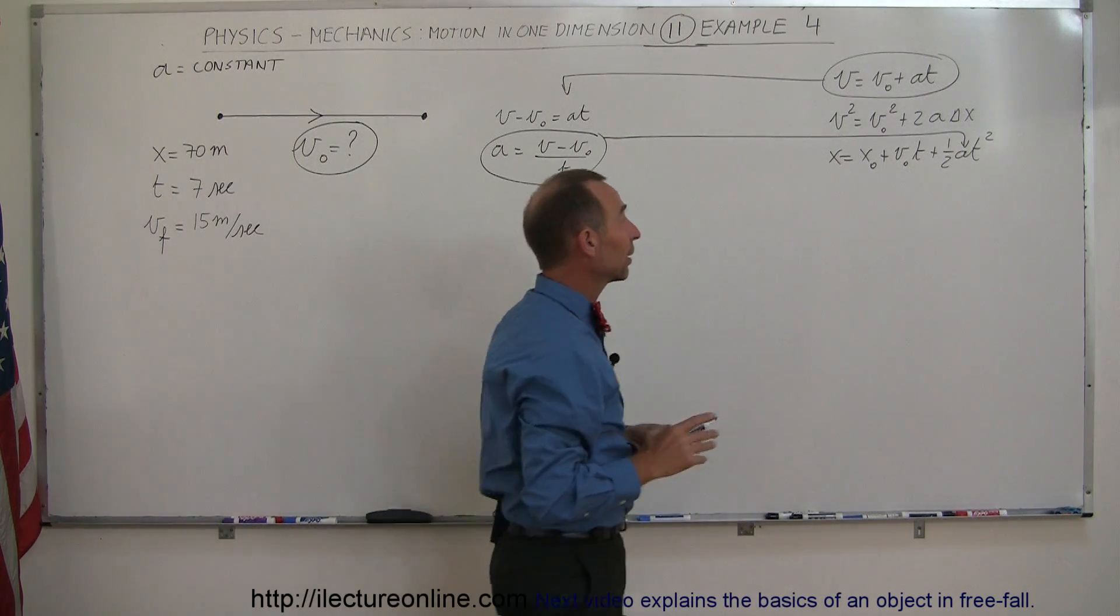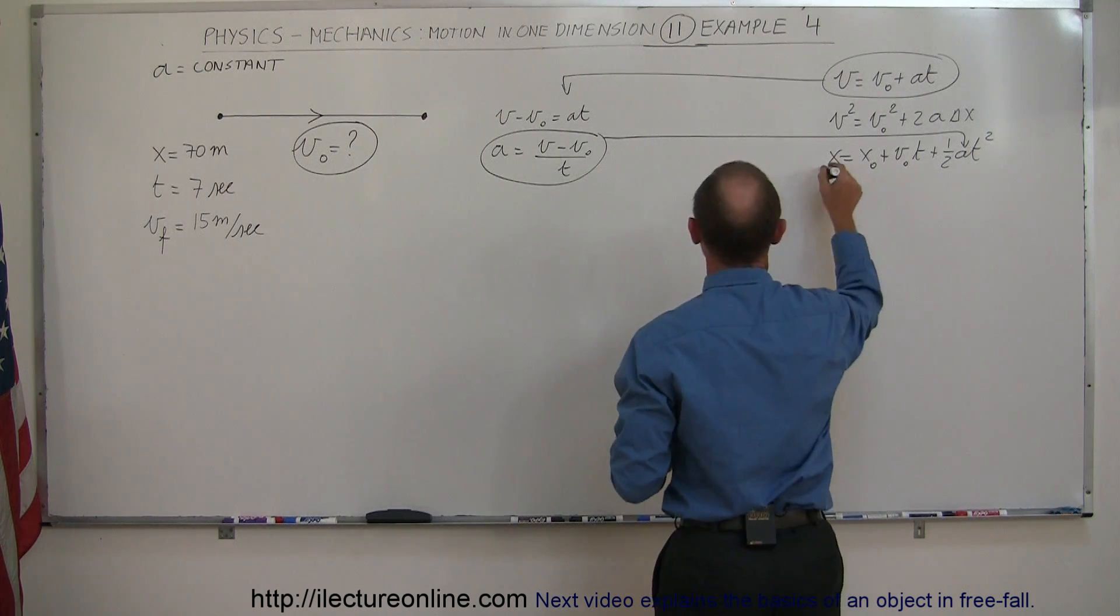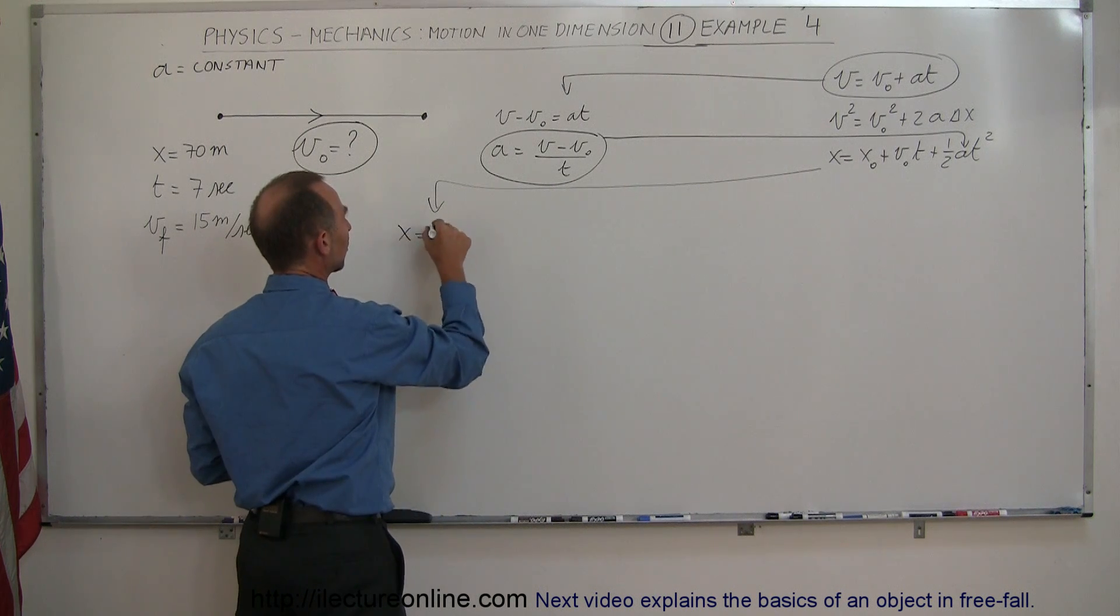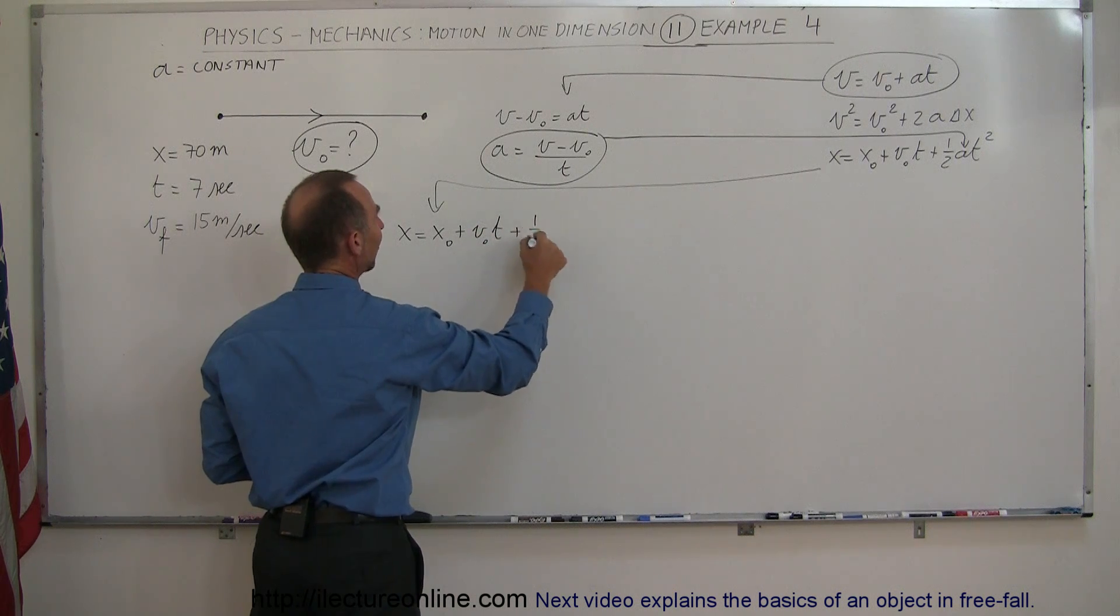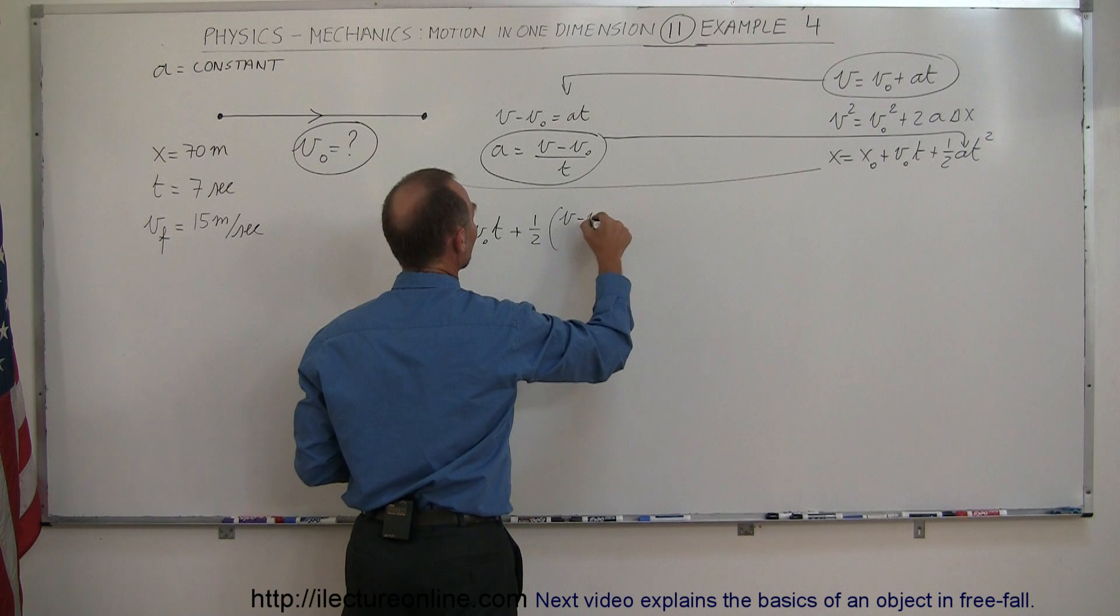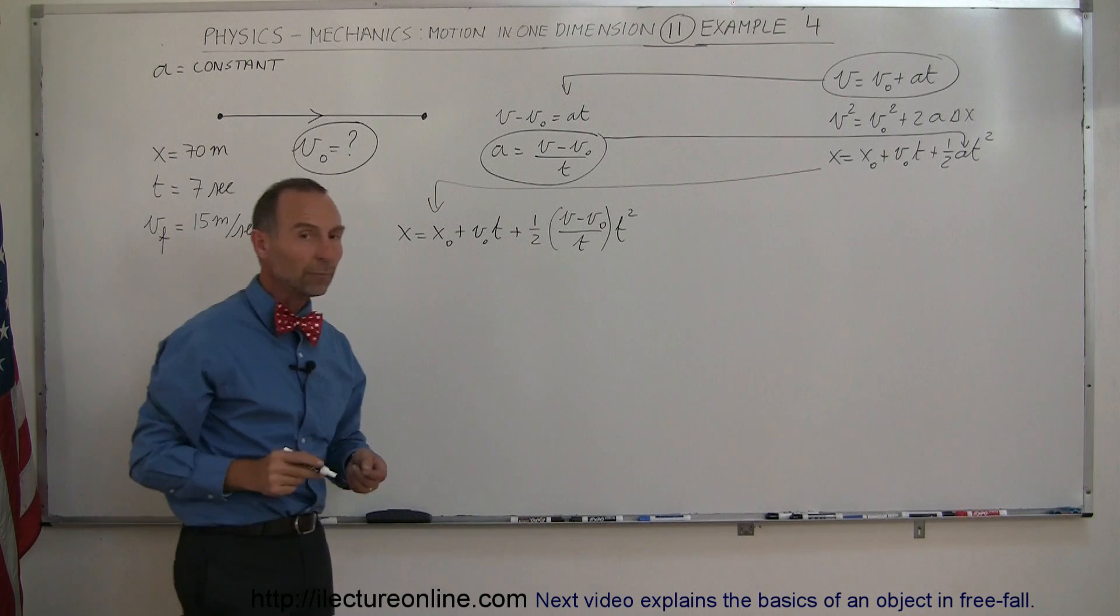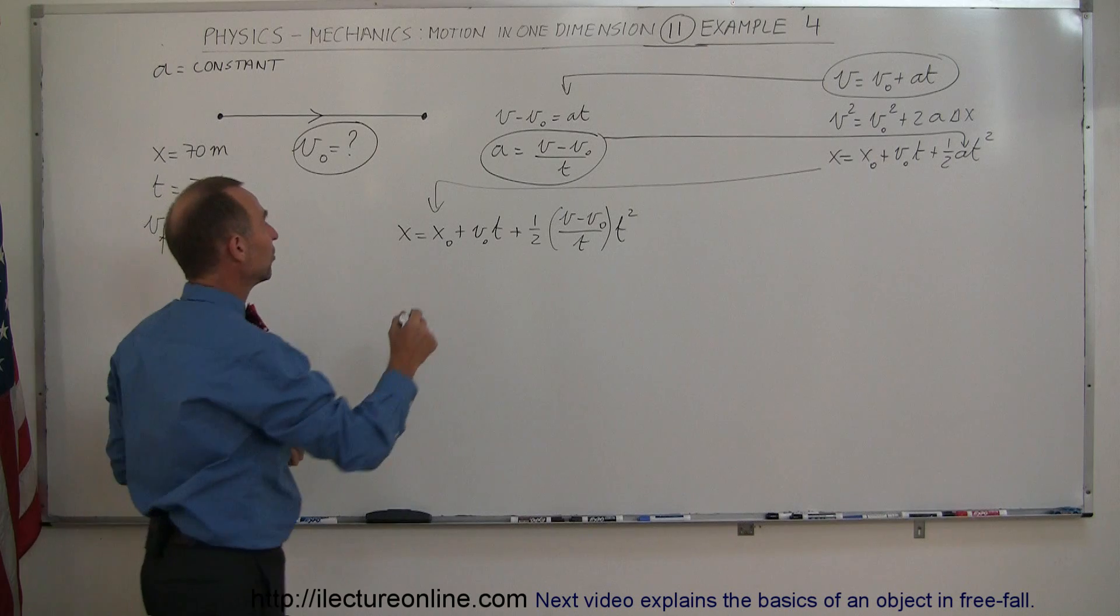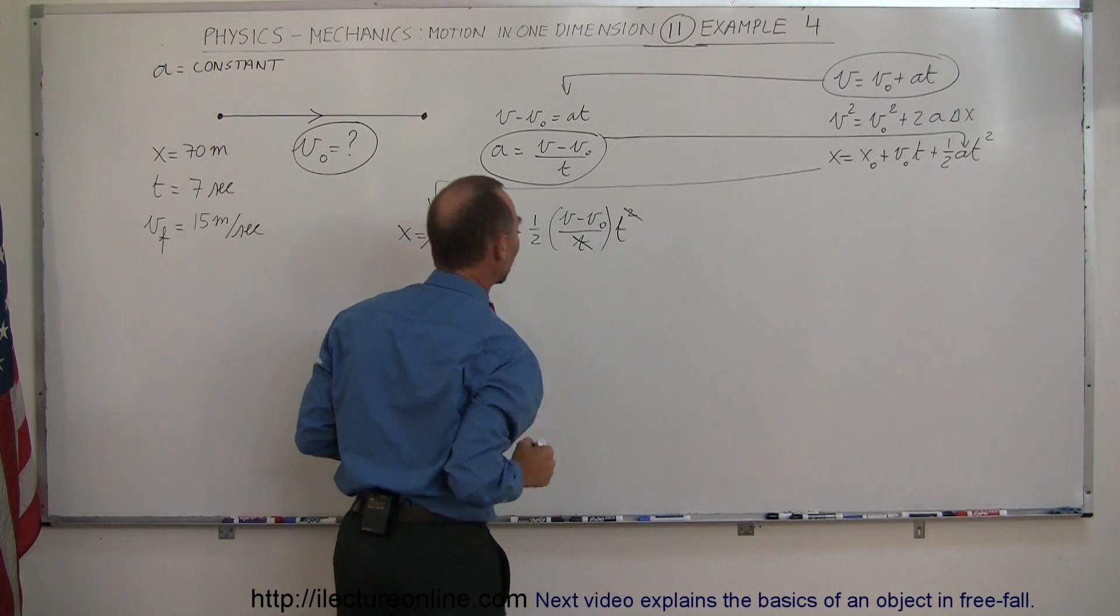So I can say that V minus V sub naught equals A times T, or A is equal to V minus V sub naught divided by T. And take that and substitute that into the third equation right here to eliminate A. And then notice that I have an equation with all unknowns except for V sub naught. So let's take the second equation now. With that substitution, we have X equals X sub naught plus V sub naught times T plus one-half, and instead of A, I'm going to write this quantity right here: V minus V sub naught divided by T times T squared. Right away we can make some simplifications. We know that X sub naught can be assumed to be zero, so that disappears. And we know that this can cancel out with that right there.